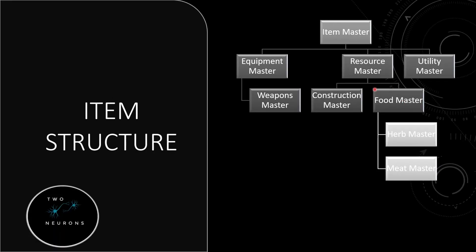Finally, under our food master for today's video, we're going to create a herb master and a meat master — sorry for the joys of an American living in the UK switching between herb and herb. This is the final structure we'll have today. Under our herb master, we'll have a test item; under our meat master, we'll have a test item. Under our equipment master, we'll have armor items that can be equipped. Under our weapon master, we'll have weapon and mining items. Under our construction master, construction-related items. Under the herb or meat masters, food items. Under our utility master, utility-based items.